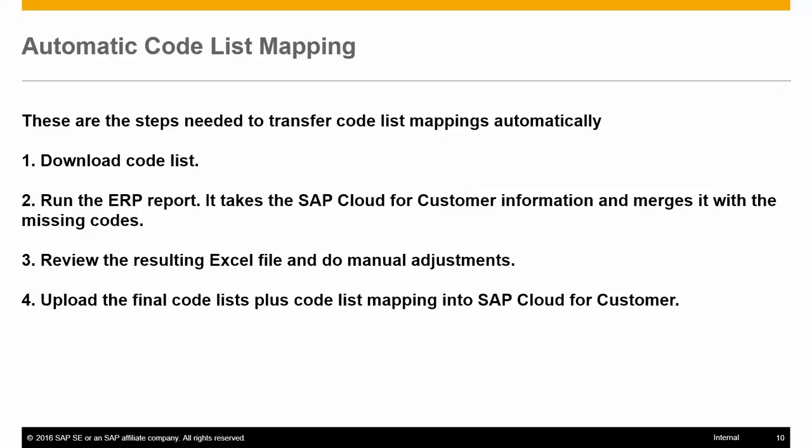The steps to perform automatic codelist mapping are: first, download the codelist and the mappings from the cloud system; second, run the ERP report, which takes the SAP Cloud for Customer information and matches it with the missing codes; third, review the resulting Excel file and do manual adjustments only if needed; fourth, upload the final codelist plus codelist mapping into SAP Cloud for Customer.